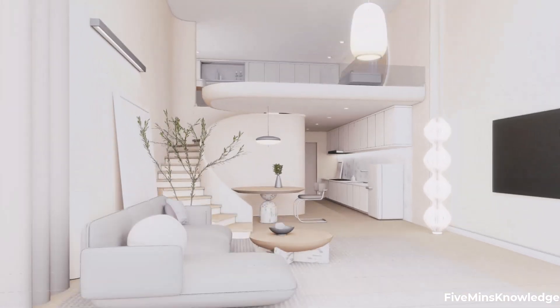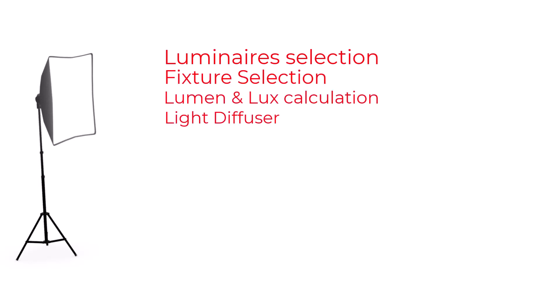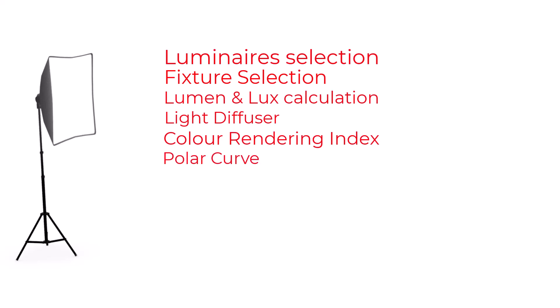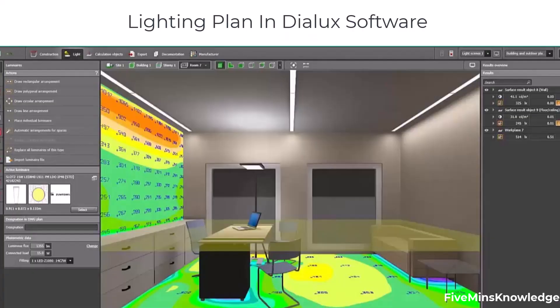In this course, we will cover luminaires selection, fixture selection, lumen and lux calculation, light diffuser, color rendering index, light polar curve, and color temperature. Then we will design a real shopping mall lighting system using manual calculation. Then we will design the circuit in AutoCAD, and also visualize the lighting plan using Dialux software.